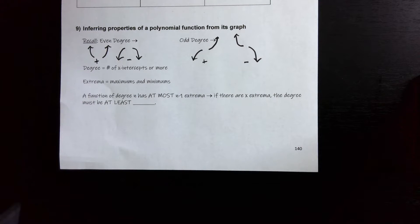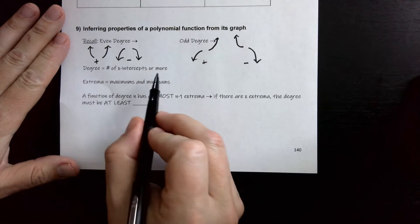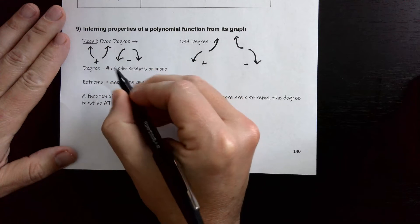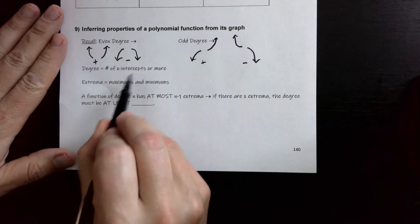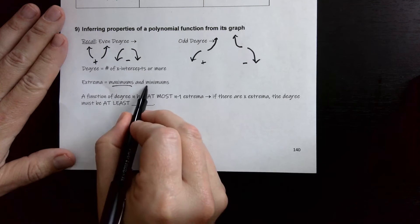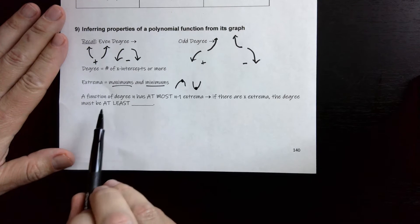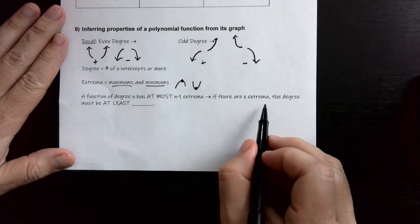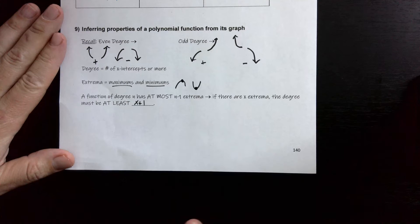The degree of the function is at least the number of x-intercepts. The degree can be higher than the number of x-intercepts because sometimes the graph bounces off the x-axis instead of crossing it. Extrema are our maximums and minimums. A function of degree n has at most n minus 1 extrema, so if there are x extrema, the degree must be at least x plus 1 — one more than the number of extrema.